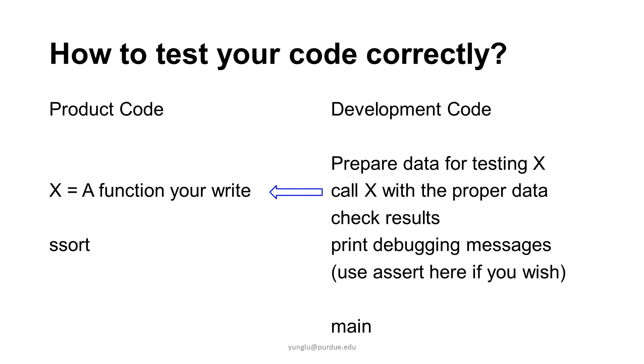Imagine that X is the function that will be in your product. If you want to test function X, you write in a separate file to prepare the data needed for testing X. After X is called, your development code checks whether data processed by X is correct. For the second homework assignment, the X is the ssort function and the development code is the main function to test ssort.